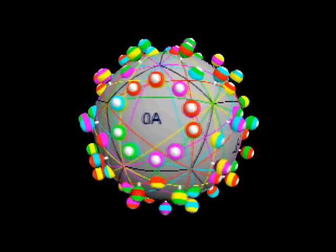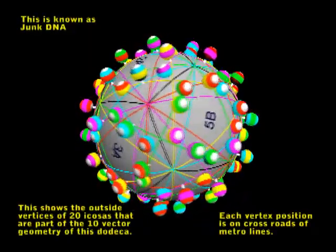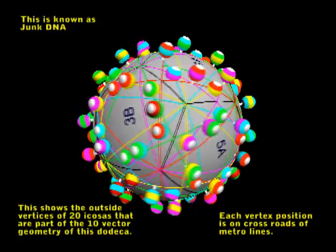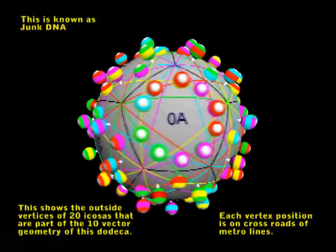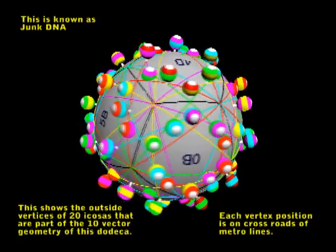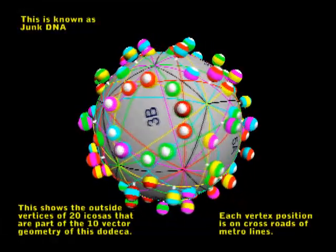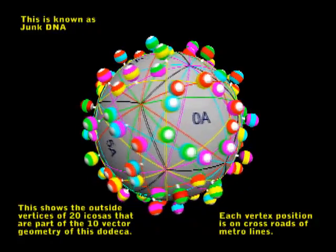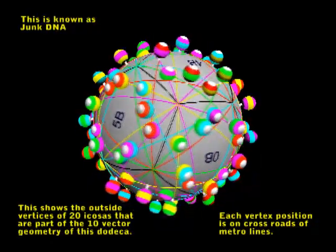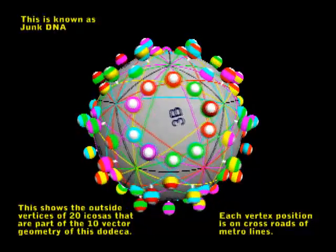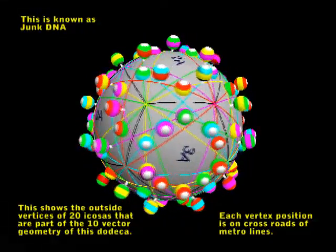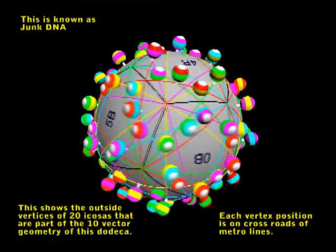Before I end this video, I'm taking you back to the DNA metro again. In my previous videos, I showed two icosas in a dodeca being part of the DNA geometry. But this pair of icosas is only for one vector only. What you see in front is that I'm showing the outside vertices of the icosas on the 10 vectors. What's amazing is that the ladder for each of these vertices, they run through the crossroads of the DNA metro.